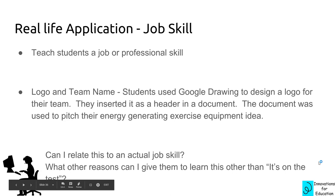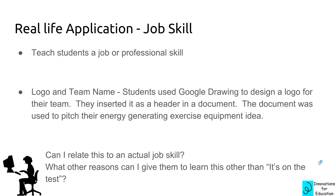The job skill hook is to teach students an actual job or professional skill — they're always asking 'when will I use this in real life?' The example is logo and team name: students used Google Drawings to design a logo for their team, then inserted it as a header in documents they created to pitch their energy-generating exercise equipment idea. Students can design their own logo for any team project where they'll present to the class — they're like a little mini business and are very proud of those logos and team names.